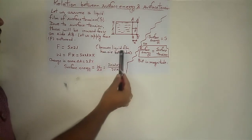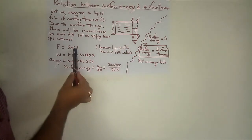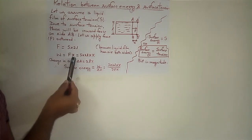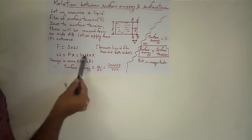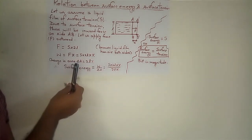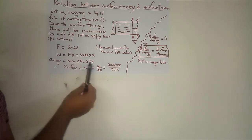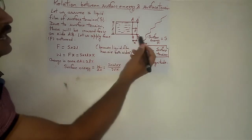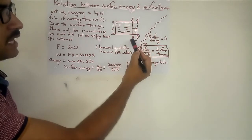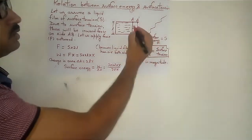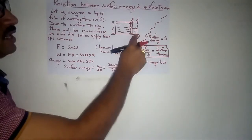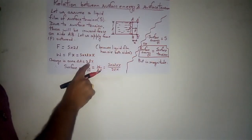Because the liquid film has air on both sides, we multiply by 2. Work will be equal to force into displacement: W = S × 2L × x. We are also finding the change in area, ΔA. ΔA will be equal to L × x, where L is the length and x is the displacement — we have pulled AB up to A'B' by distance x. Since there are upper and lower layers, we multiply by 2, giving ΔA = 2Lx.